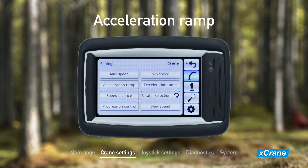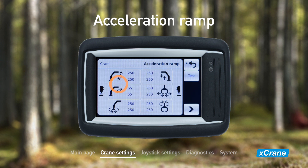Acceleration ramp defines how quickly each crane movement goes from minimum to maximum speed. The opposite is true for the deceleration ramp variable. Values for both variables are expressed in milliseconds.